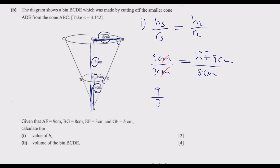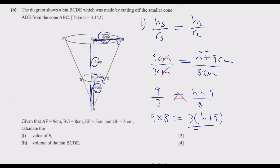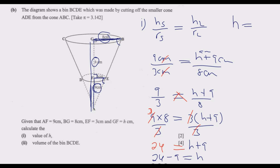Setting up the proportion: 9 over 3 equals H plus 9 over 8. Cross-multiplying: 9 times 8 equals 3 times (H plus 9). Dividing both sides by 3: 24 equals H plus 9. Therefore H equals 24 minus 9, which gives H equals 15.